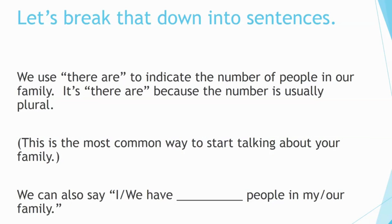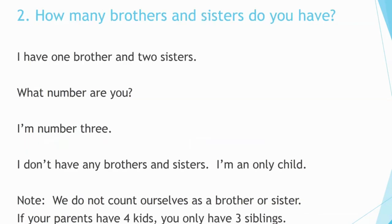We can also say 'I' or 'we have five people in our family.' Number two: how many brothers and sisters do you have? I have one brother and two sisters. What number are you? I'm number three. I don't have any brothers and sisters. I'm an only child.